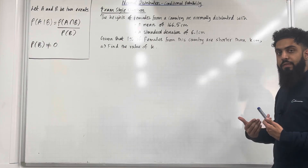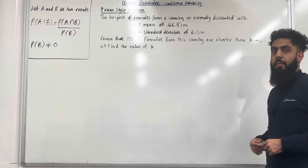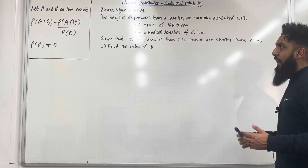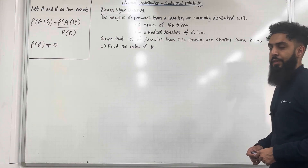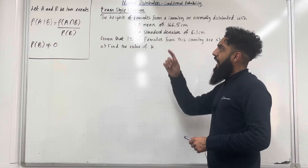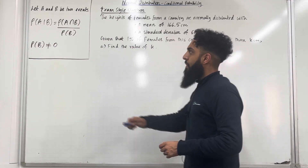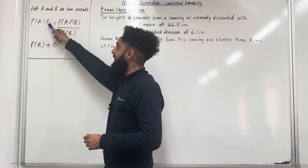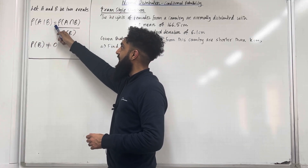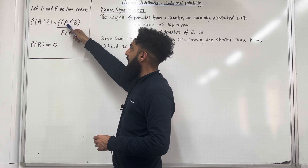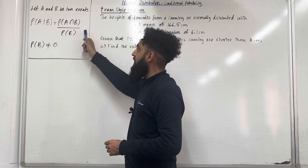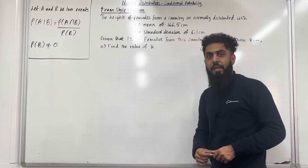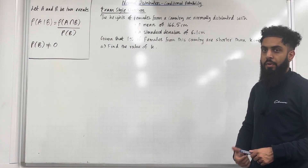In this teaching video I'll be explaining how to find a conditional probability from a normal distribution. Let's have a look at the key fact for this particular section. Let A and B be two events. The probability of A, given that the event B has taken place, is equal to the probability of A intersect B divided by the probability of B, provided that the probability of B is not equal to 0.